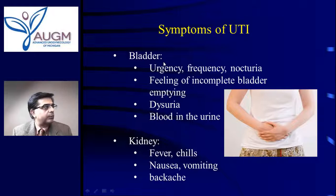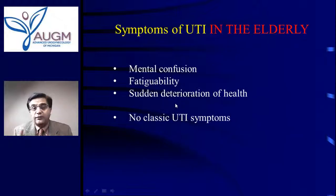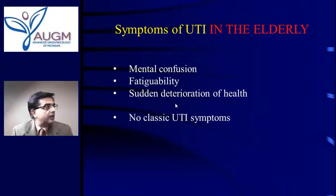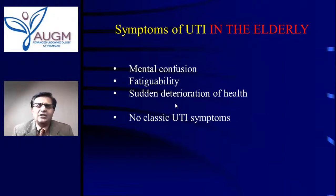One important thing to note about the elderly: women over the age of 70 may behave differently. They may not have the classic symptoms of a urinary tract infection like urgency and frequency. Instead, they may have different symptoms such as mental confusion, fatigability, and sudden deterioration of health — just saying 'I don't feel well.'